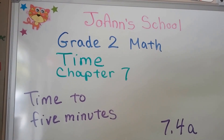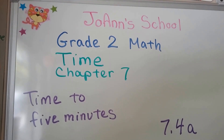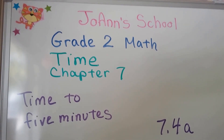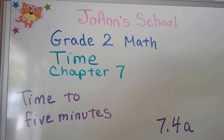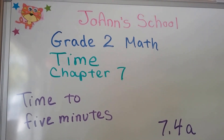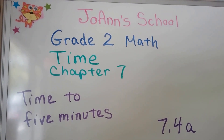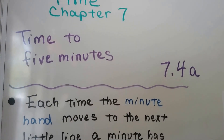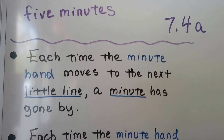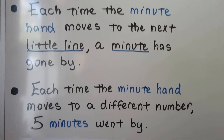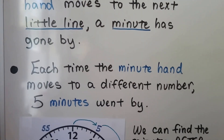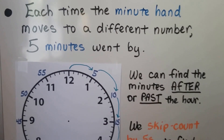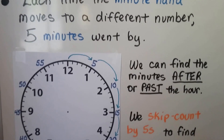We're going to talk about telling time to five-minute increments — this is lesson 7.4a. There's going to be another part in 7.4b where we tell time to the minute, so you'll want to watch that video too. Each time the minute hand moves to the next little line, a minute has gone by. Each time the minute hand moves to a different number, five minutes have gone by.